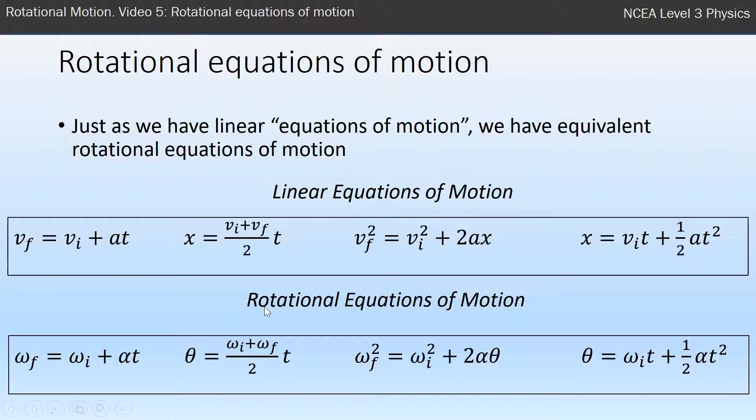The rotational equations of motion are for an object that's spinning and undergoing acceleration in that rotation, so speeding up its spinning or slowing down its spinning, and these equations are equivalent. The first one: angular velocity final equals angular velocity initial plus angular acceleration times time. Look at the equivalence to the formula above it.